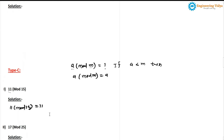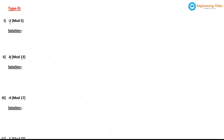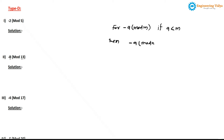We have completed all the problems of type C. This is type D. In type D there are 5 problems and here we have to find the modulus of a negative number. Before solving type D problems, let me explain the relevant rule of modular arithmetic. The rule says: if we want to find (-a) mod m, and a is less than m, then (-a) mod m = m - a. Using this formula we can calculate the modulus value of a negative number.